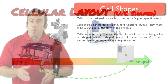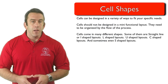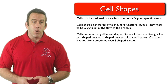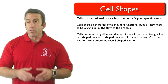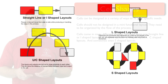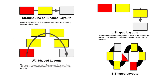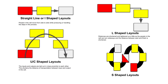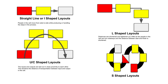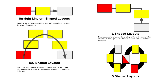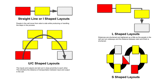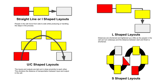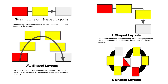While there are many different shapes, cells are most commonly organized in straight line I-shaped layouts, L-shaped layouts, U-shaped layouts, C-shaped layouts, and sometimes even S-shaped layouts.